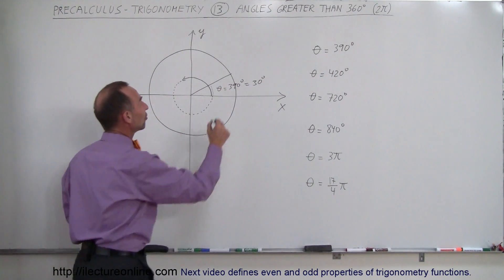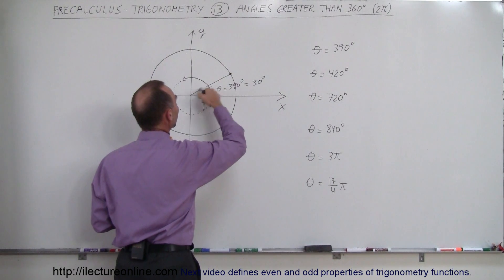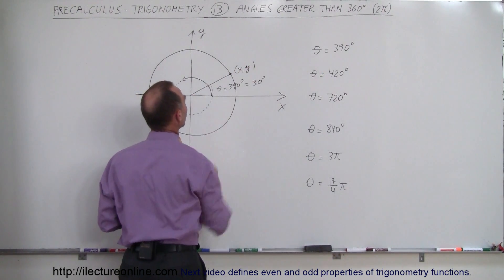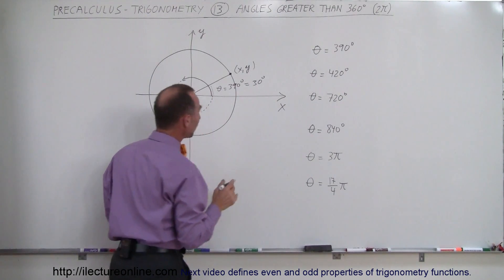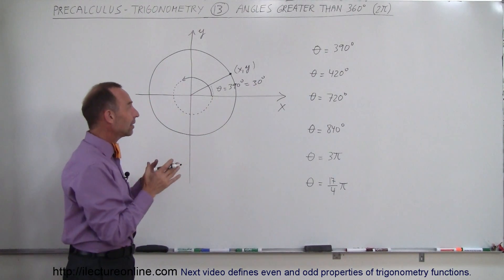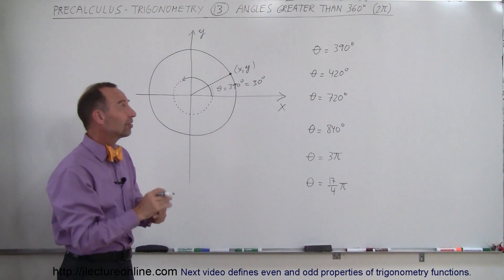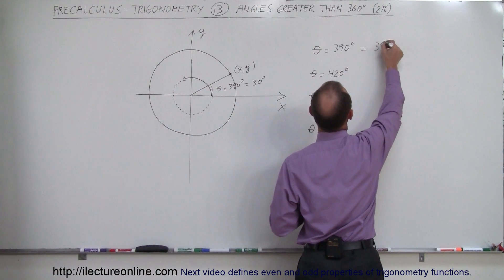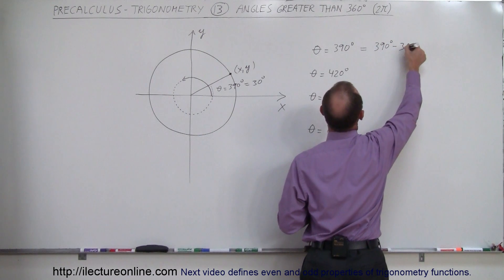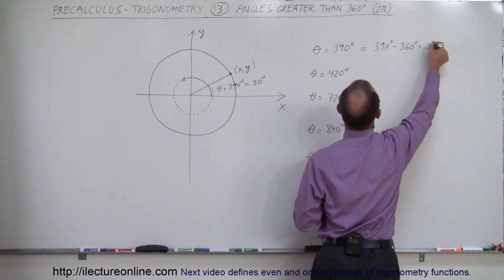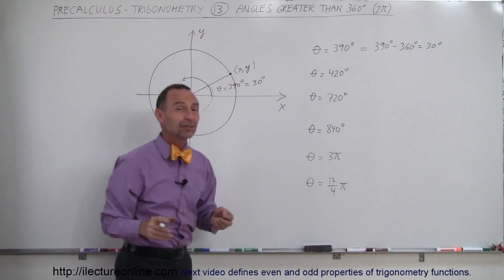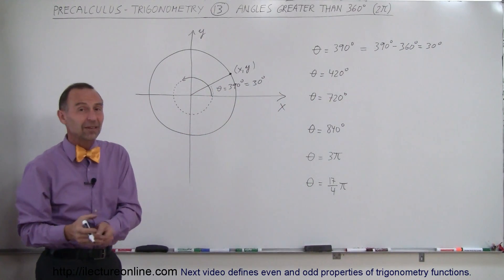It's the same angle. It'll give you the same xy value where the hypotenuse hits the unit circle. So what we can do then is to find an angle that falls between 0 and 360 degrees, we simply subtract. This is equal to 390 degrees minus 360 degrees until we get something between 0 and 360.